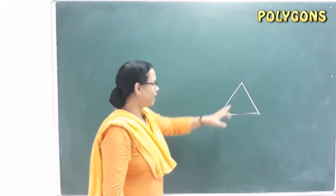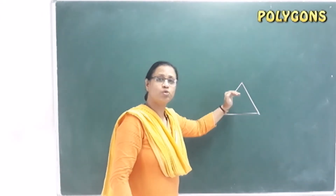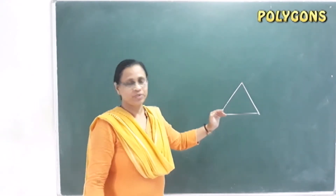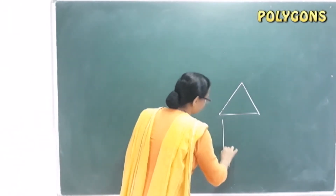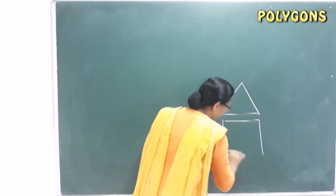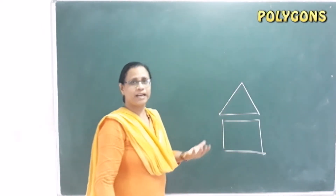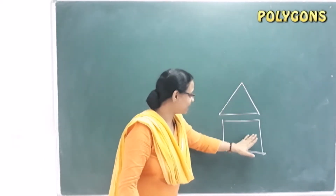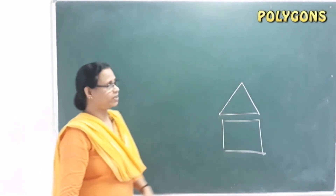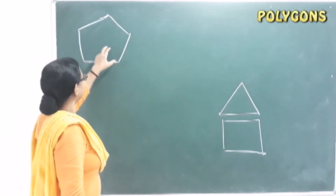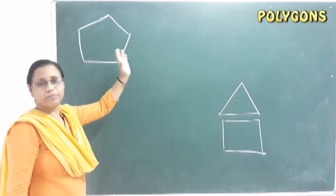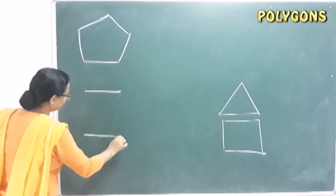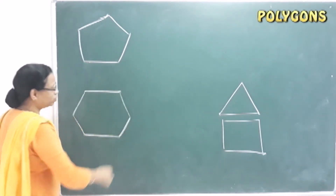A triangle is the first polygon. In four sides, we call it a quadrilateral. This is Trigona (triangle), and this is Chaturbhuj (quadrilateral). There are four sides. In five line segments, we call it Panchabhuj — that is pentagon. In six sides, we call it hexagon, also called Shadbhuj.